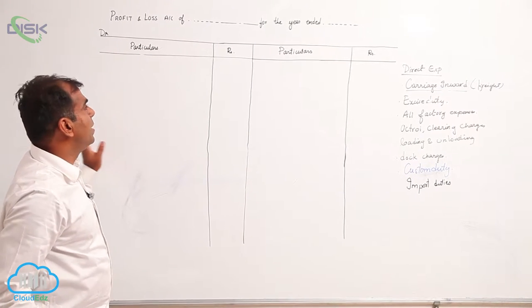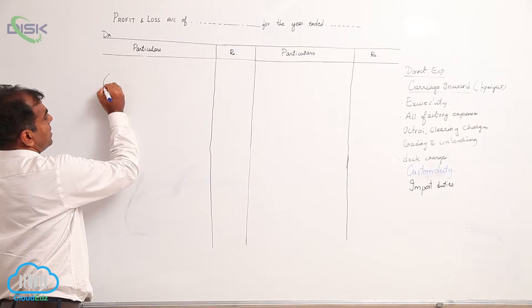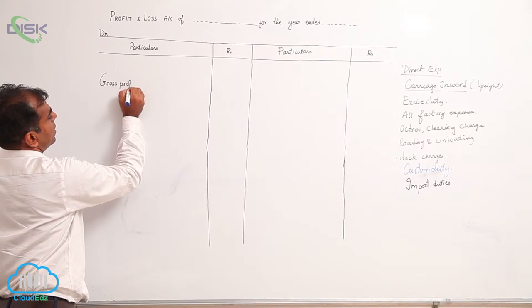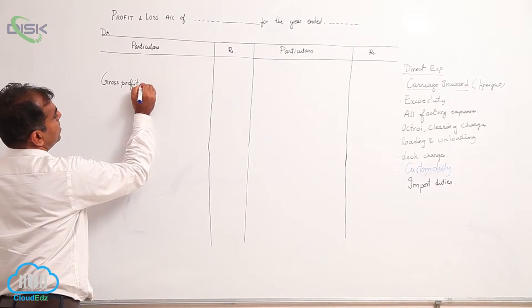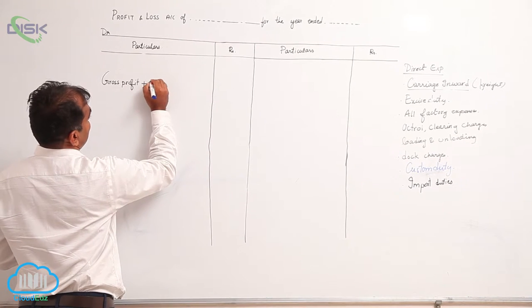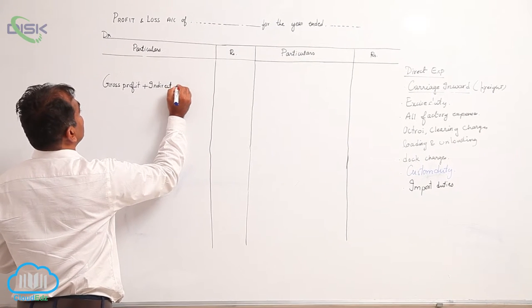So profit and loss account, you can say in simplified form, represent in equation. You can say usually if you have gross profit, so you can say it is gross profit minus or plus indirect incomes.